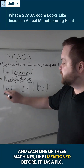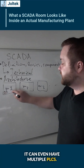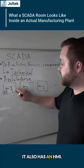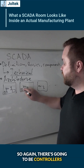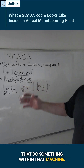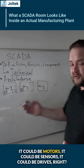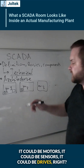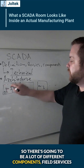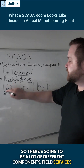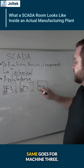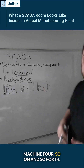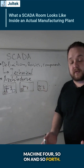Each one of these machines has a PLC — it can even have multiple PLCs — and it also has an HMI. There are going to be controllers that do something within that machine: it could be motors, it could be sensors, it could be drives. So there are going to be a lot of different components, field services and field devices inside of our machine. The same goes for machine 3, machine 4, and so on and so forth.